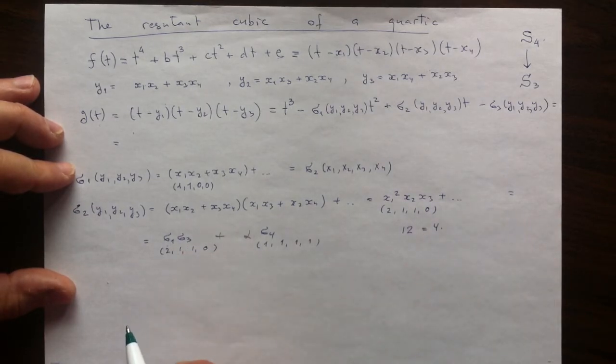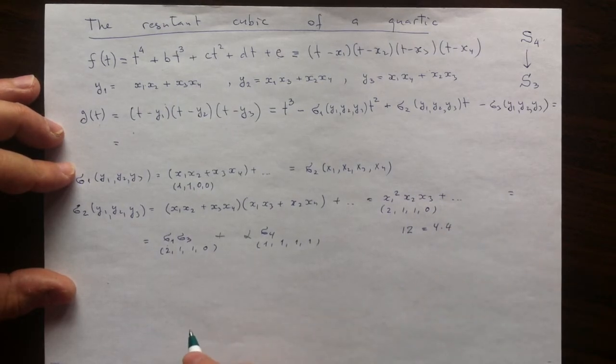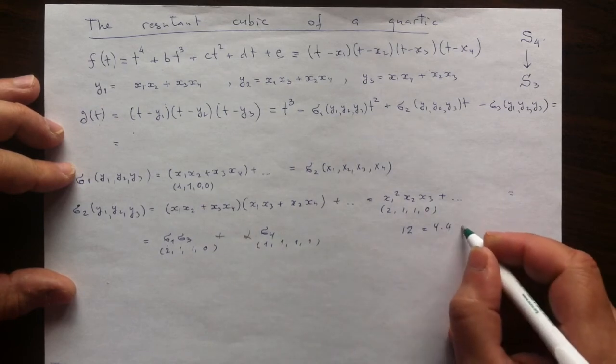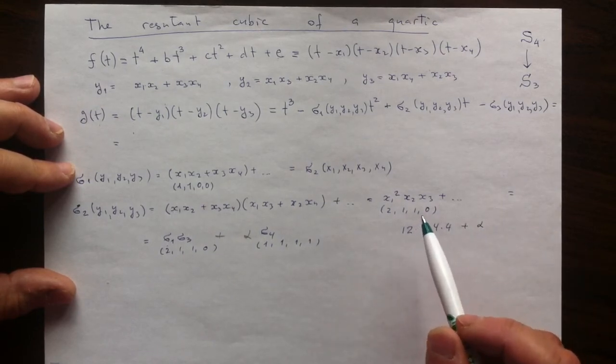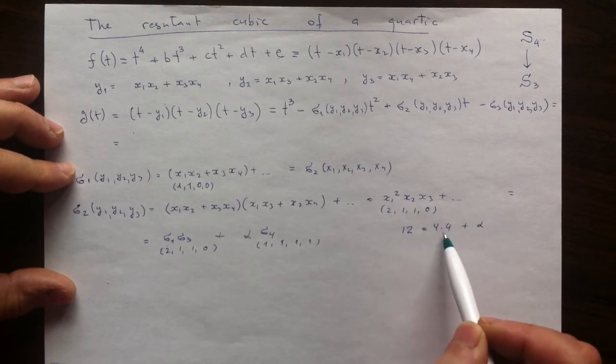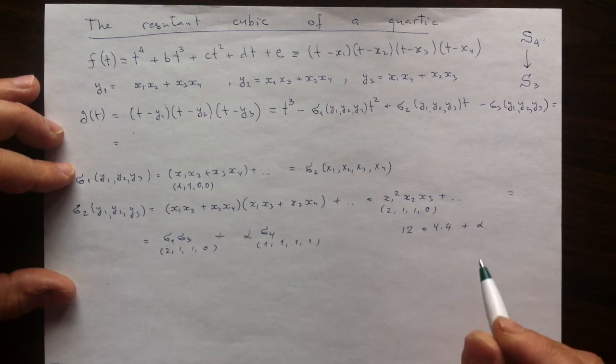σ3 on 1, 1, 1, 1 is another 4. And then σ4 is the product of all, so this is just α. So we have 12 on one side and 16 plus α. That makes our α negative 4.